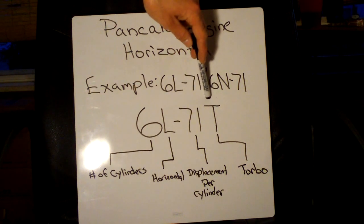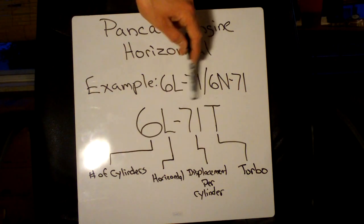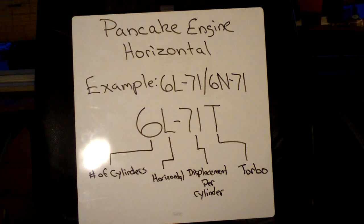And then whether or not it's a turbocharged engine, you're going to have a T after the displacement per cylinder or just nothing after that. So that about wraps it up, guys, for most of the Detroit Diesel two-stroke engine codes. There are a few other specialties out there, but I'm pretty sure that I covered them all.